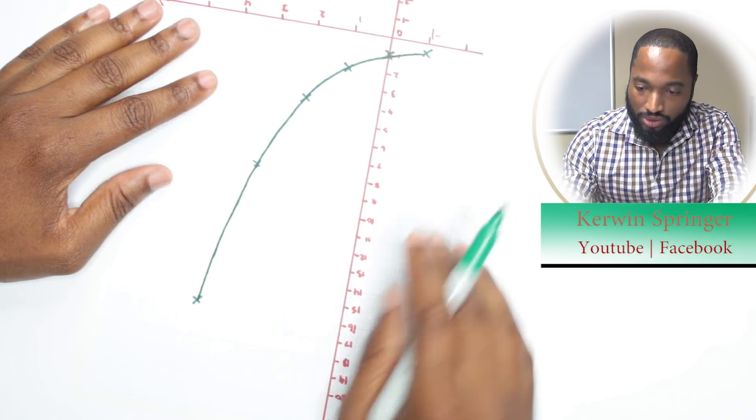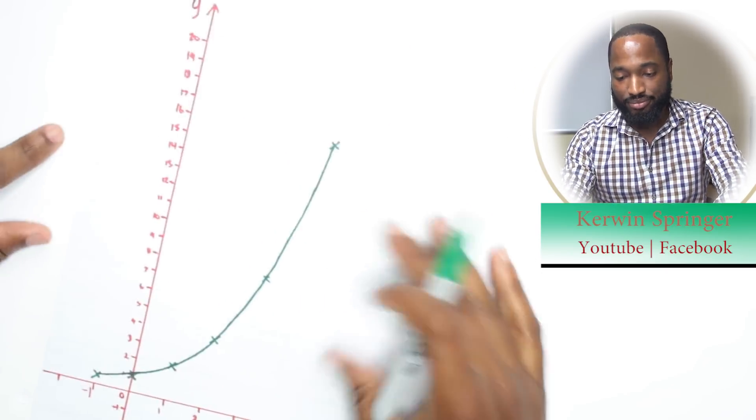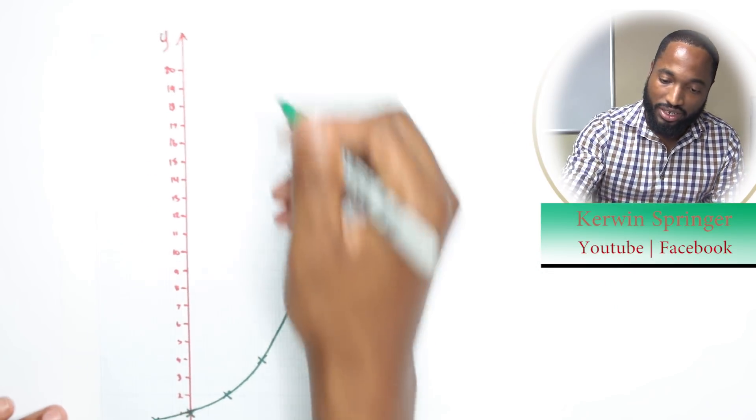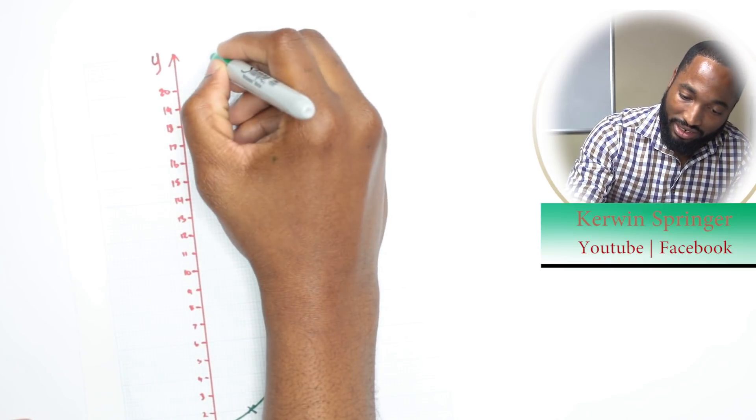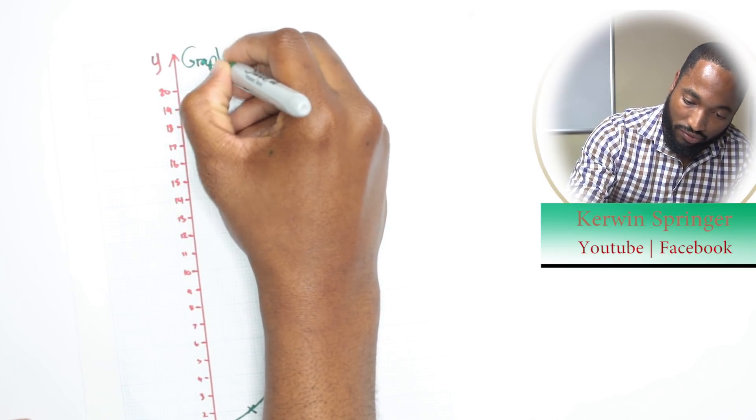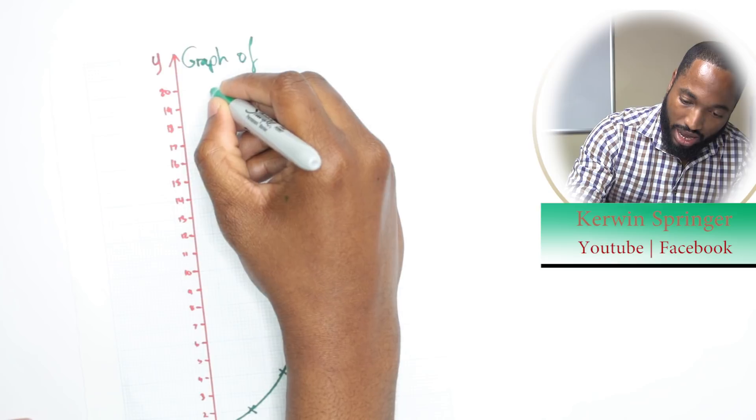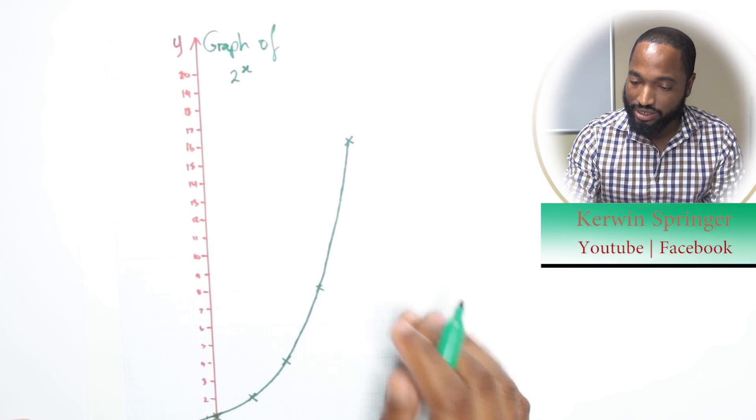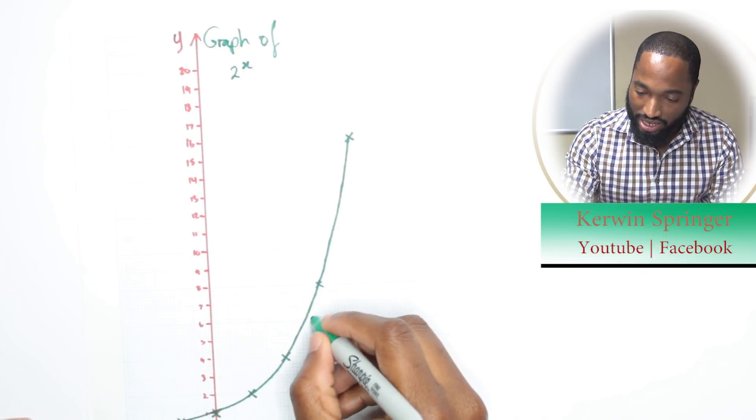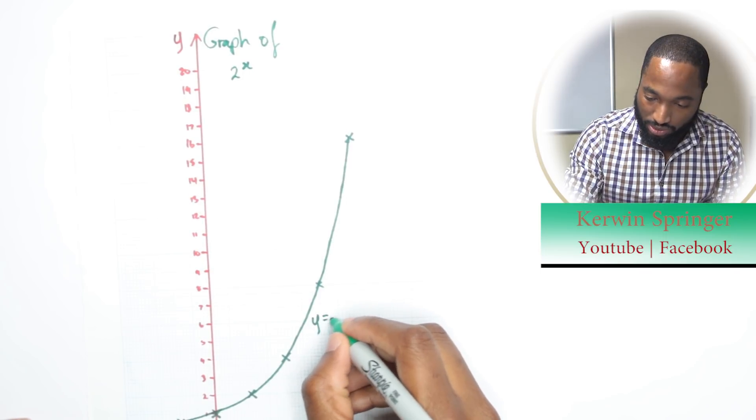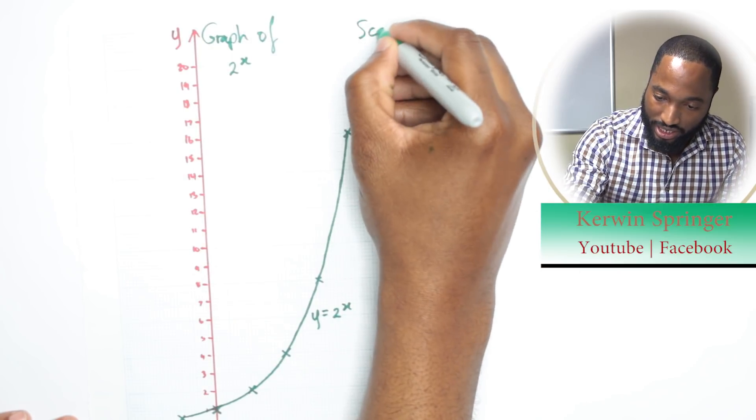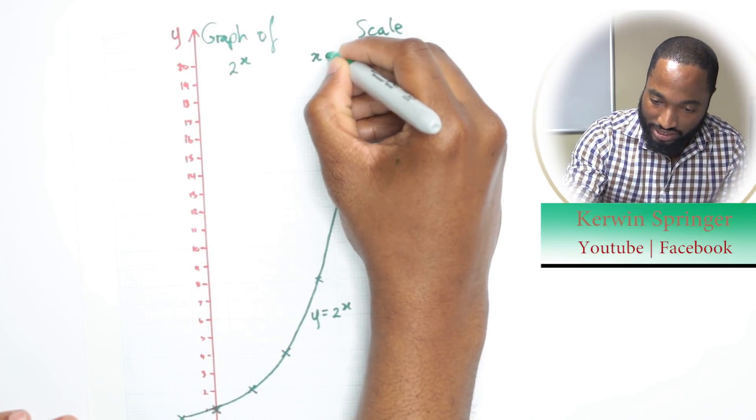Alright, one nice diagram, good to go. Now, because you want to get in the habit of doing proper stuff, you come here and write the title: graph of y equals 2 to the x. You write this as y equals 2 to the power of x. And you put your scale for the x-axis.